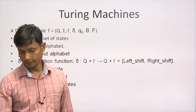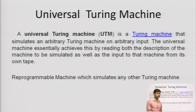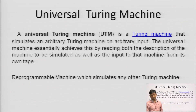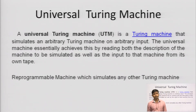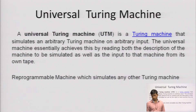Now we come to the Universal Turing Machine. You know there are seven tuples in Turing machines. So what is the Universal Turing Machine? It is a programmable machine that simulates other Turing machines. This Universal Turing Machine is a Turing machine that simulates an arbitrary Turing machine on arbitrary input.